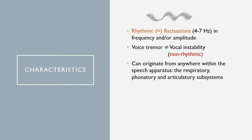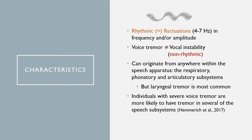Voice tremor can originate from anywhere within the speech apparatus — that is the respiratory, the phonatory, and the articulatory subsystems — even if laryngeal tremor is most common. One study found that individuals with severe voice tremor were more likely to have tremor affecting several of the speech subsystems. In clinical practice, however, we seldom perform such examinations and therefore we don't know exactly where the patient's voice tremor originates from.